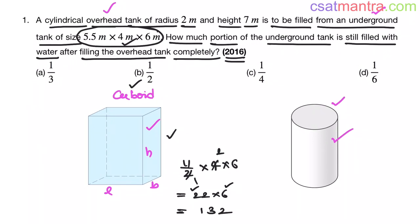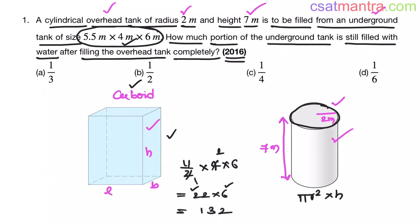The cylindrical tank's dimensions are given: radius is 2 meters and height is 7 meters. The volume of a cylinder is Pi R square into H. We have a circle extended in the third dimension — the circular area is Pi R square, so Pi R square into H is the volume of a cylinder.